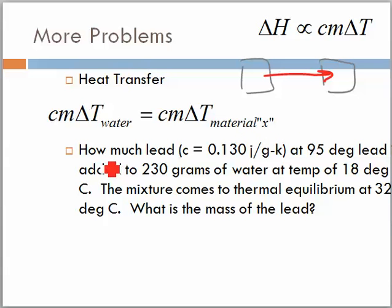Well, the question says how much lead at 95 degrees added to 230 grams of water at temperature of 18 degrees Celsius. The mixture comes to thermal equilibrium at 32 degrees Celsius. What is the mass of the lead?